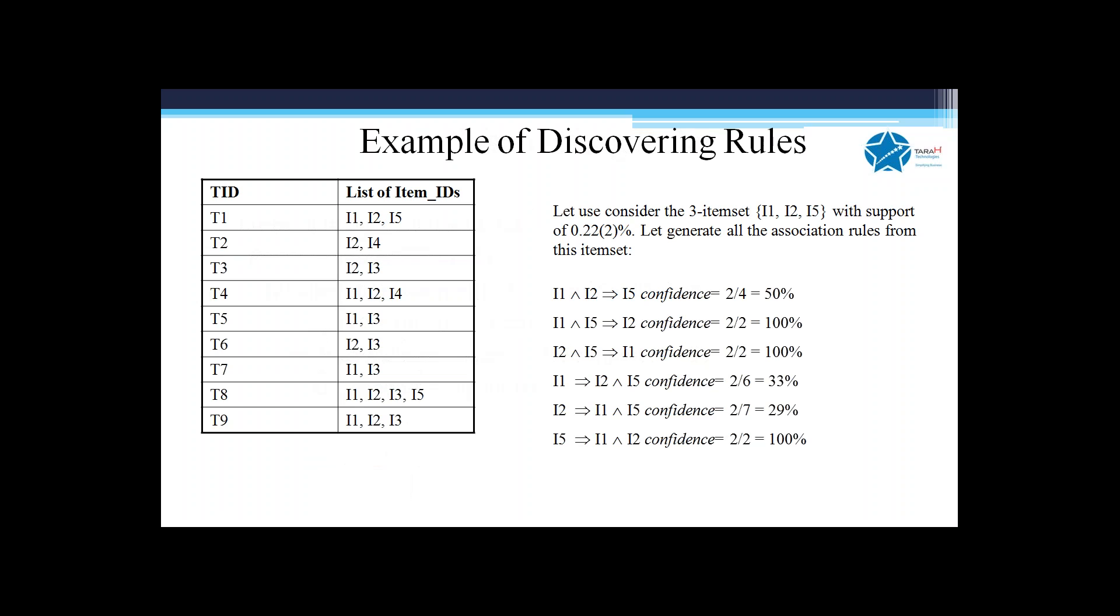Let's take this transaction database. Let's assume minimum confidence is 50%. You can easily eliminate i1 implies i2 and i5, and i2 implies i1 and i5, because confidence in this case is 2 out of 6 or 2 out of 7, which is 33% and 29%.